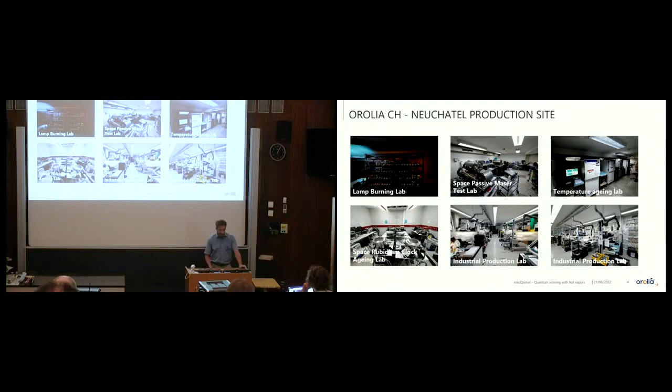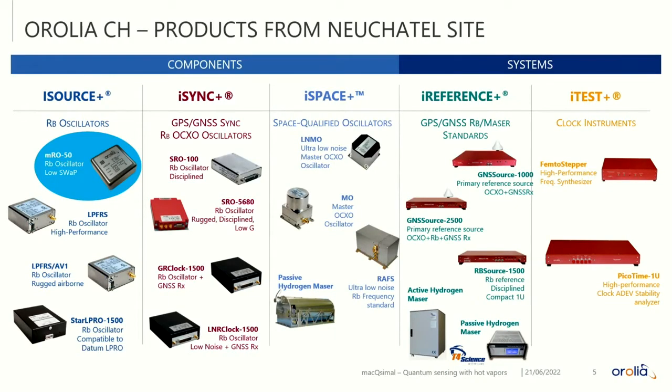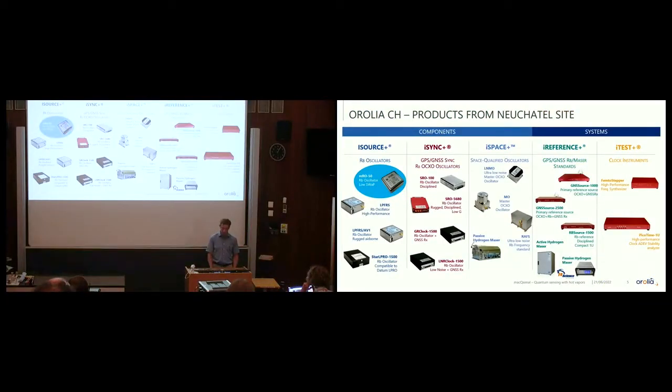At the lower right half of the slide, you see some photos from our fabrication facility in Neuchâtel, Switzerland, for industrial clocks. We also have some labs for testing these clocks. We have to age the clocks before they go out to the client. We need to do some temperature cycling. And you also see two photos of our fabrication facilities for space atomic clocks, particularly rubidium atomic clocks.